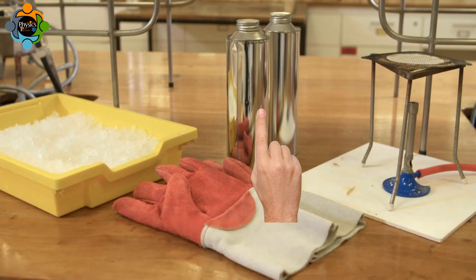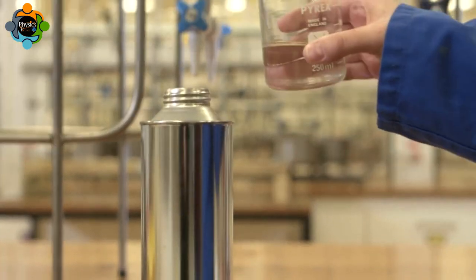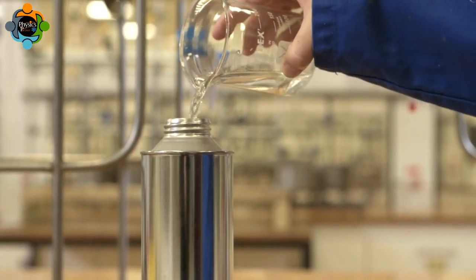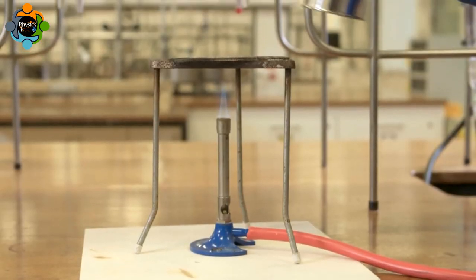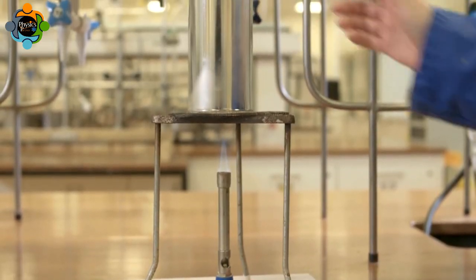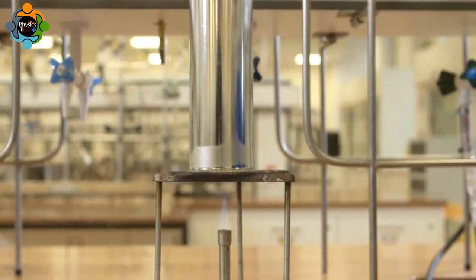In this experiment, an empty can and a water bath will be used to show the effect of pressure. About 100 centimeters cubed of water is poured into the can. The can is placed over a lit Bunsen burner.